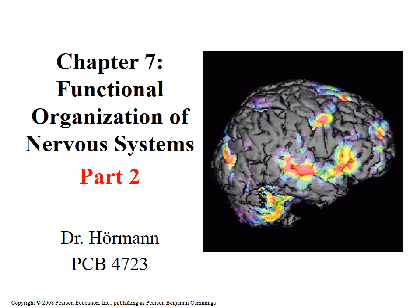Good day, everybody. Welcome back. This is going to be Chapter 7, Part 2. We are continuing our discussion about the functional organization of the nervous system. During our last conversation, we finished looking at the three main regions of the brain. What I want to do now is quickly talk about the cortex, introduce you to the homunculus, and then we'll take a look at the autonomic and the motor nervous system.